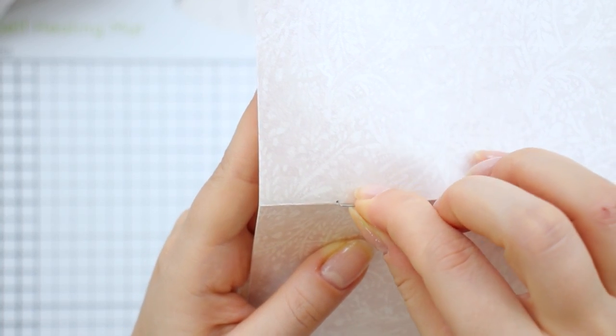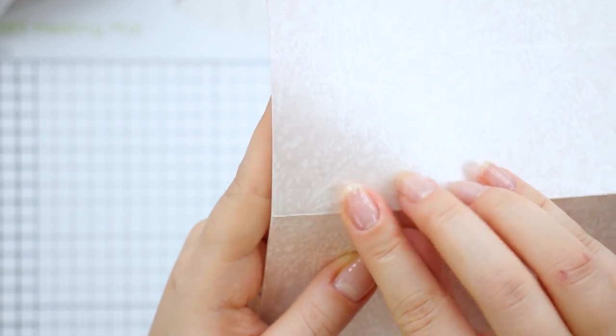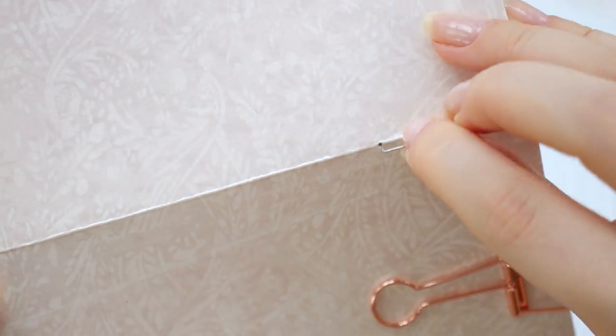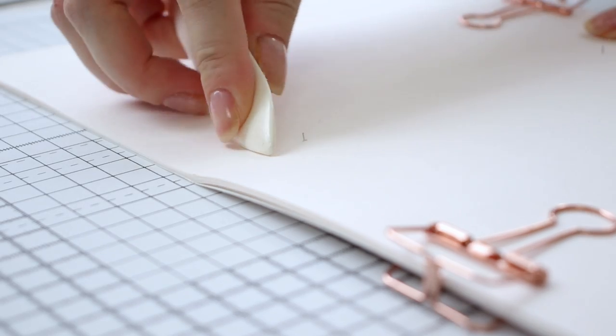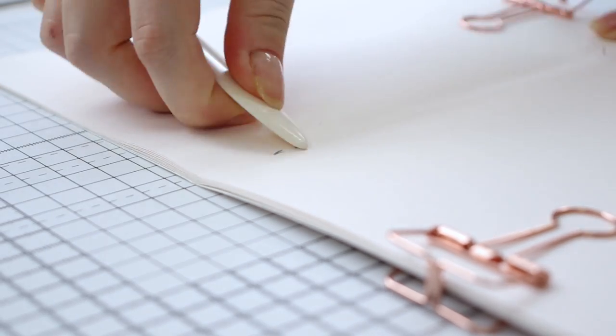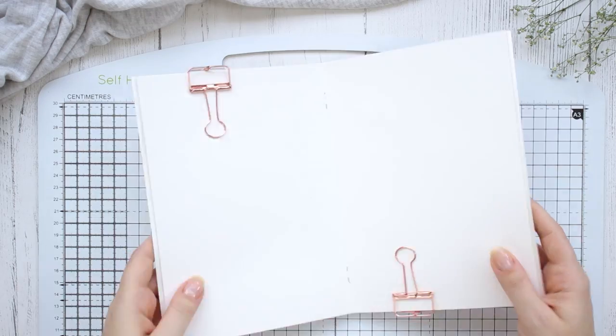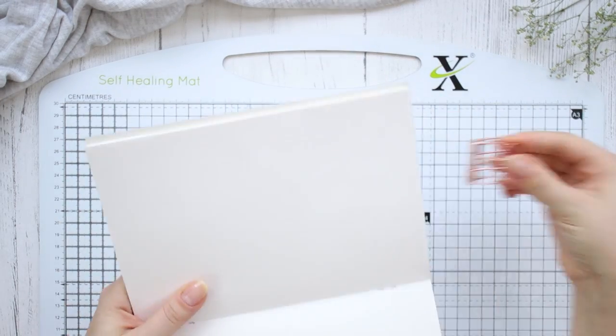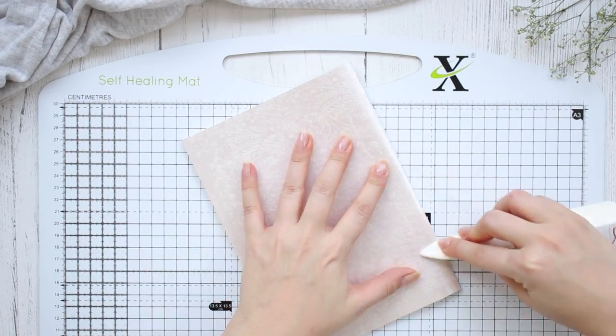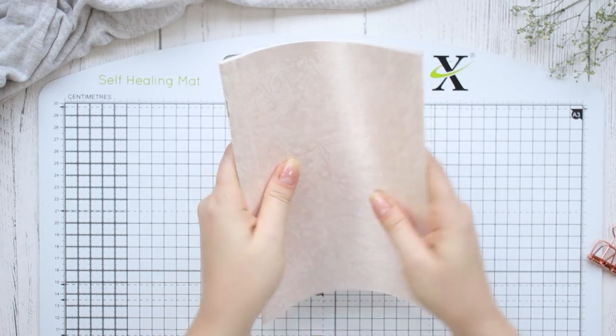Next take your staples and fit them inside the holes. This might be tricky so just wiggle them around until they come through the other side. Use something hard to fold in the staples on the inside and you're pretty much done. Just make sure you give the notebook a fold one more time and play around with it for a bit to help it lay flat.